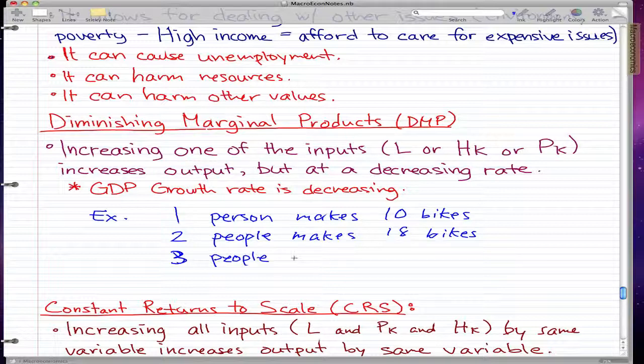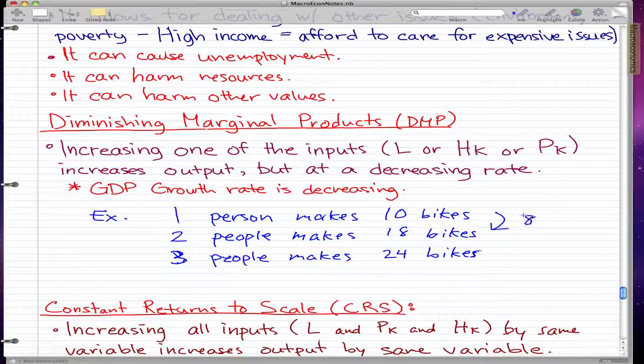Three people make 24 bytes. So you can see that when you had one person who made 10 bytes, by adding one more person we get eight more bytes. We increase the input, but if we add another person, we get 24 bytes. Again, we increase the input, but now the change is six.